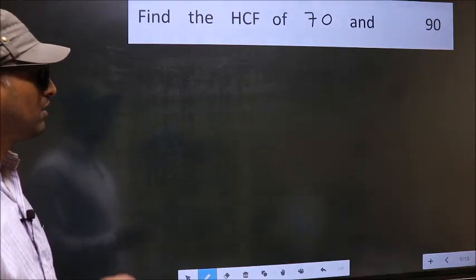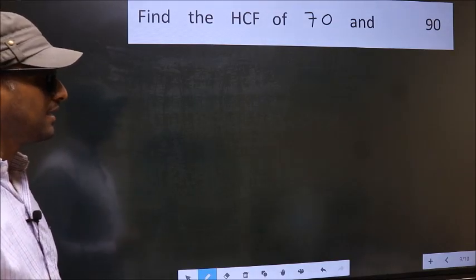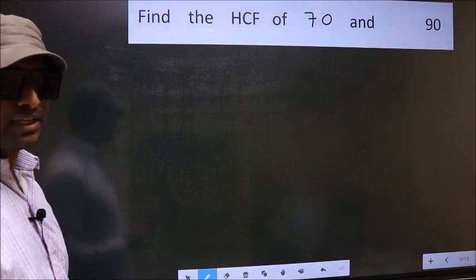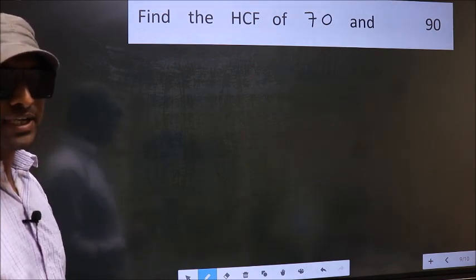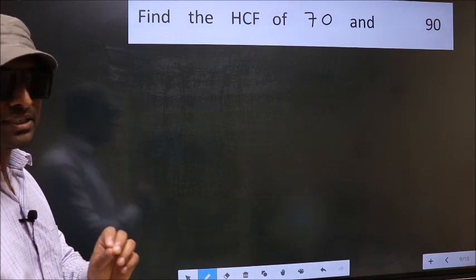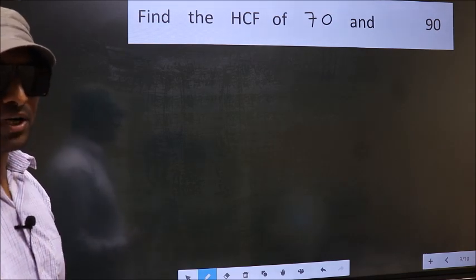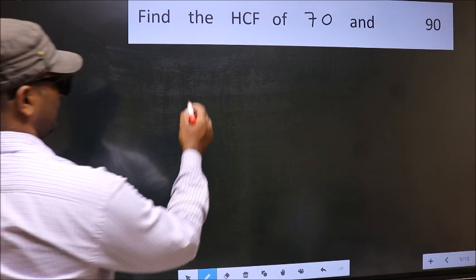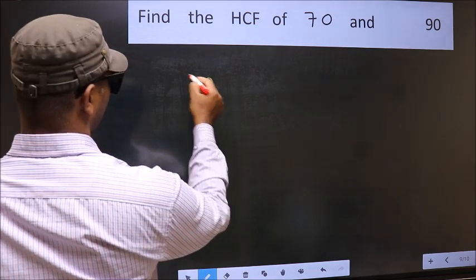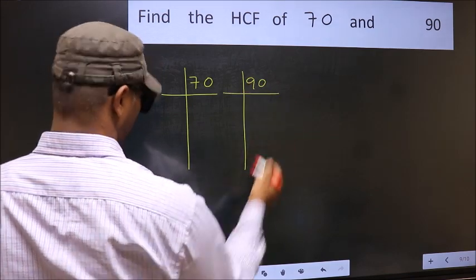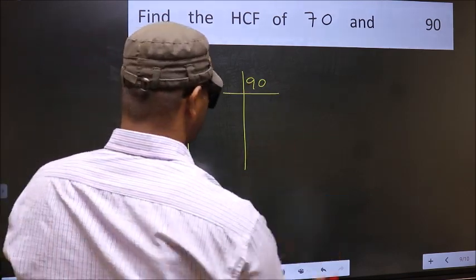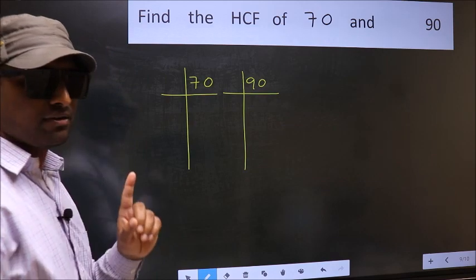Find the HCF of 70 and 90. To find the HCF, we should do the prime factorization of each number separately. What I mean is 70 and 90. This is your step 1.